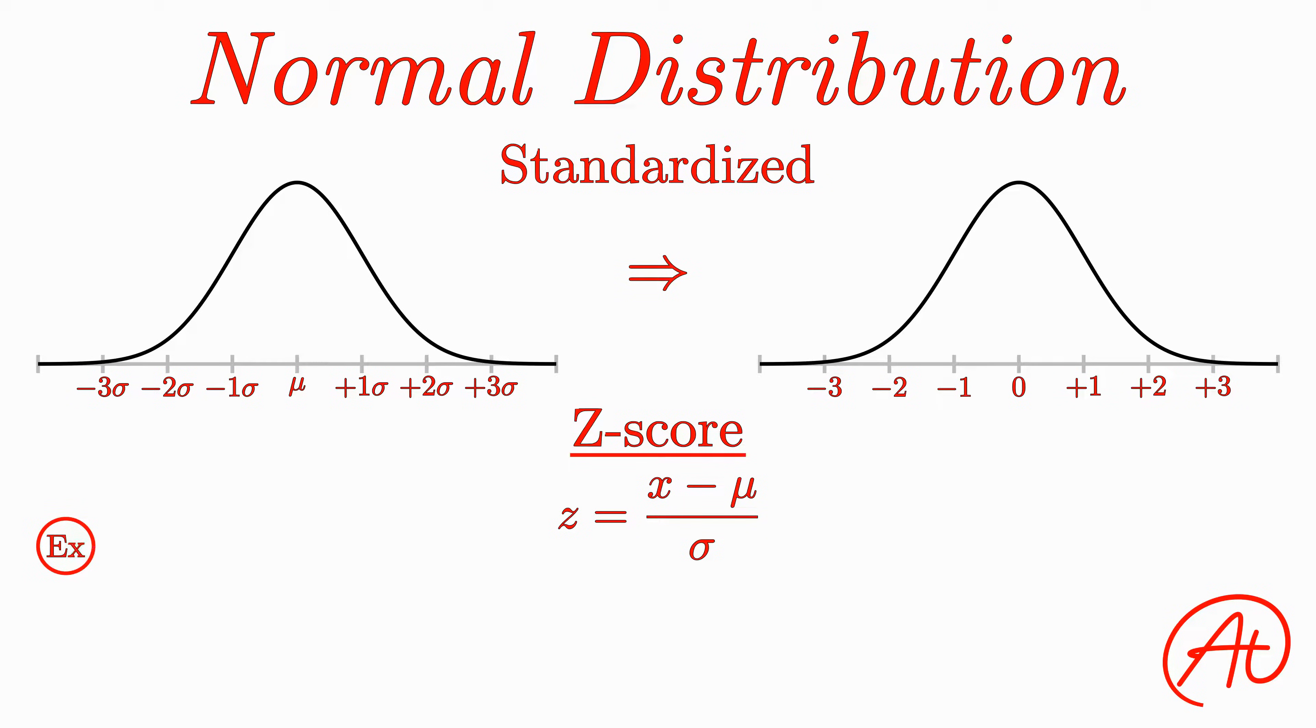So for example, if the heights of people in your stat class were normally distributed with a mean of 66 inches and standard deviation of 2 inches, your unstandardized distribution would look like this, centered at 66 inches and spreading out by increments of the standard deviation like this. If you happen to have a height of 67 inches, you would fall right here in the distribution, slightly above the mean. If we were to standardize your data point, we would find that your z-score equals 67 minus 66 divided by 2, which is 1 over 2 or 0.5.